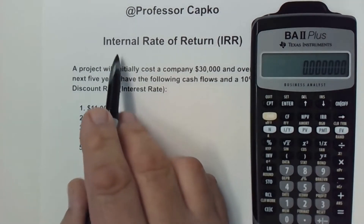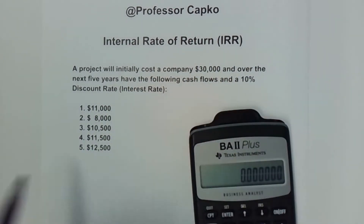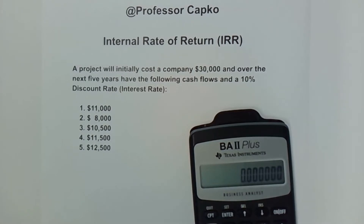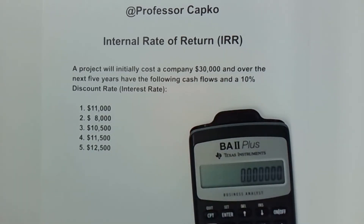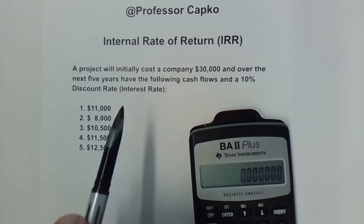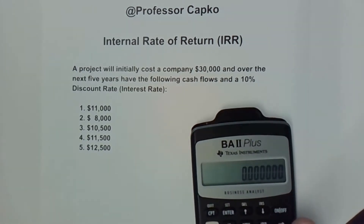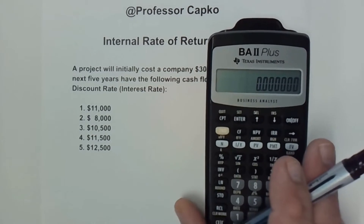Basically, what we're talking about is the internal rate of return for a project such as this one. This is the example I've been using for several different videos just to keep it consistent. If you wanted to figure out at what discount rate — the discount rate is like the interest rate that the company picks — at what discount rate the net present value for this project would be zero, we're going to calculate that today using the BA2 Plus calculator.